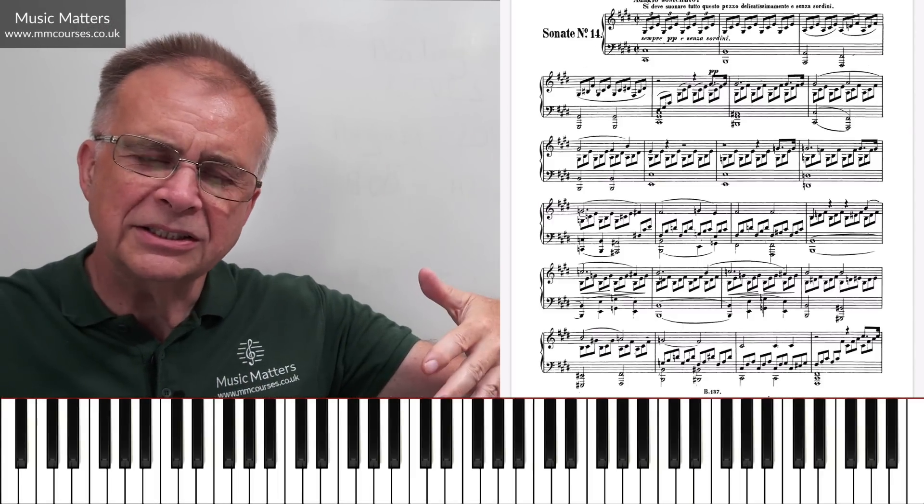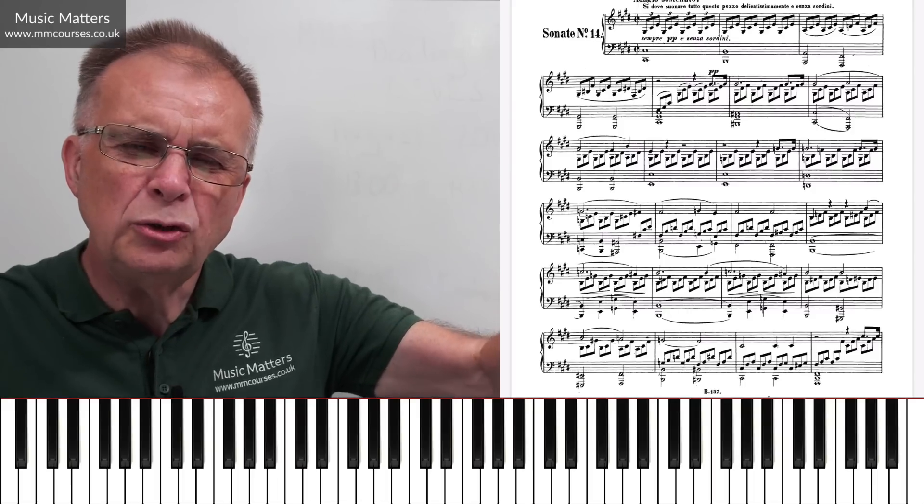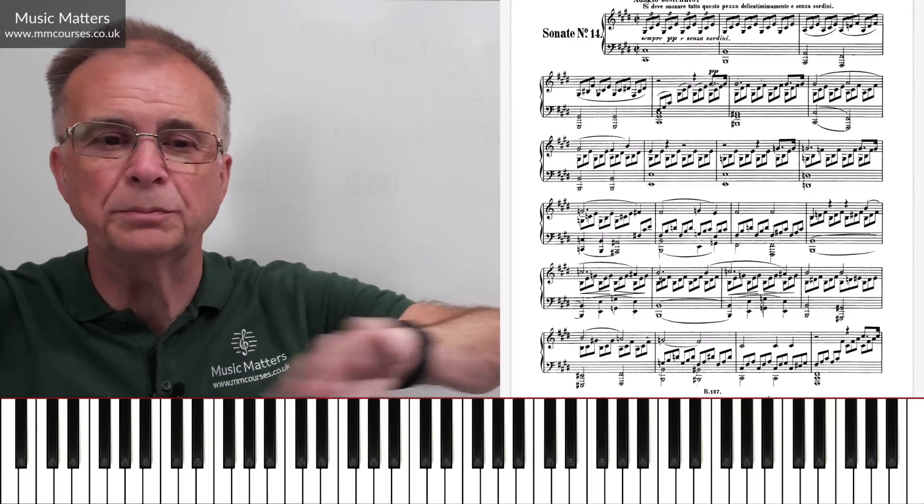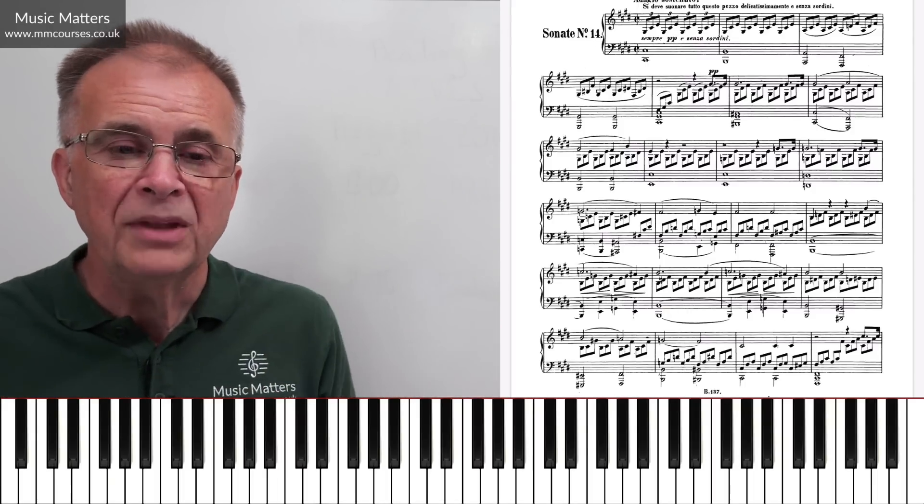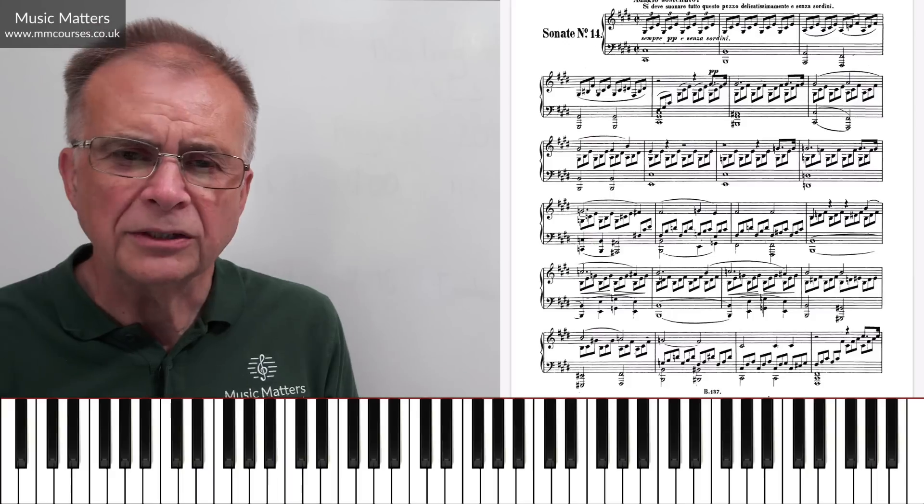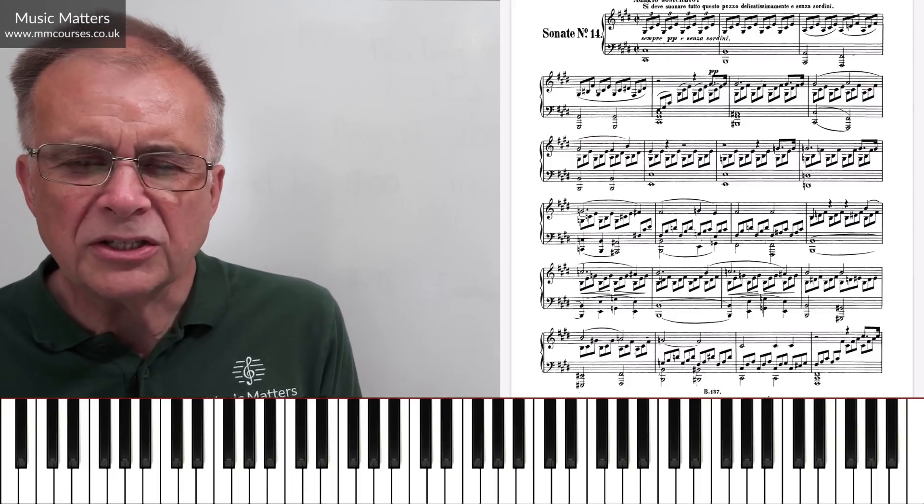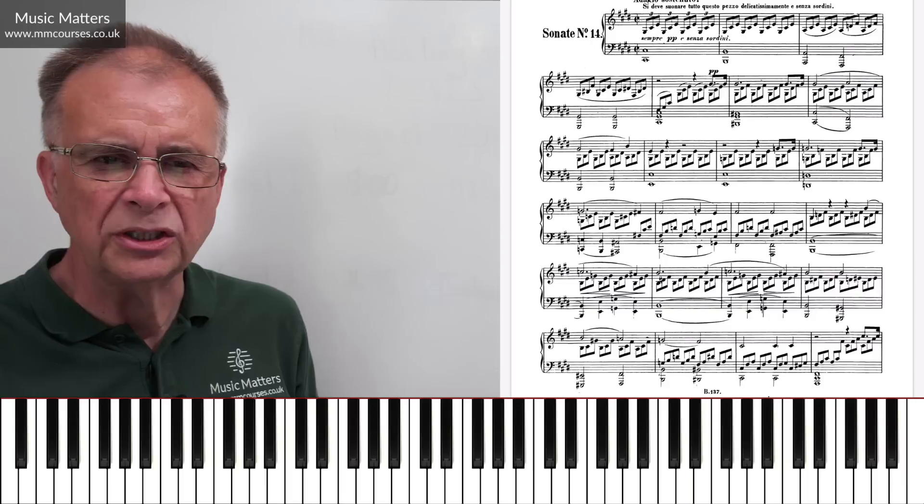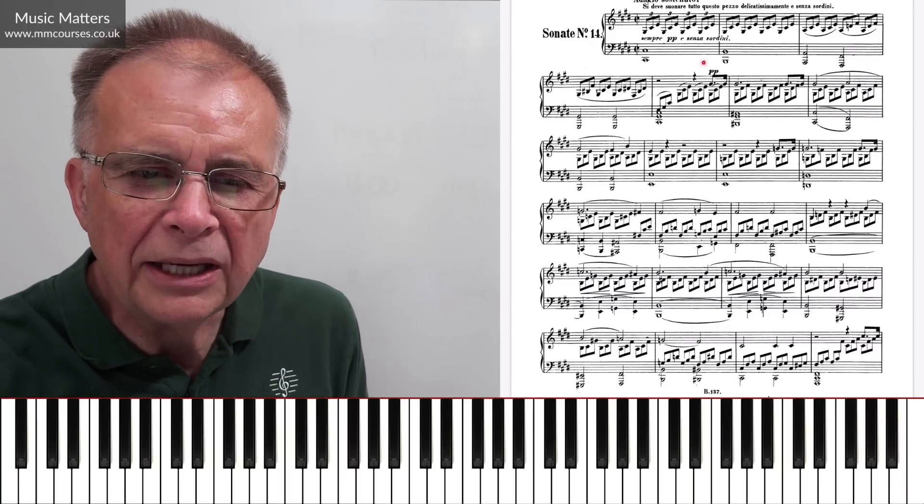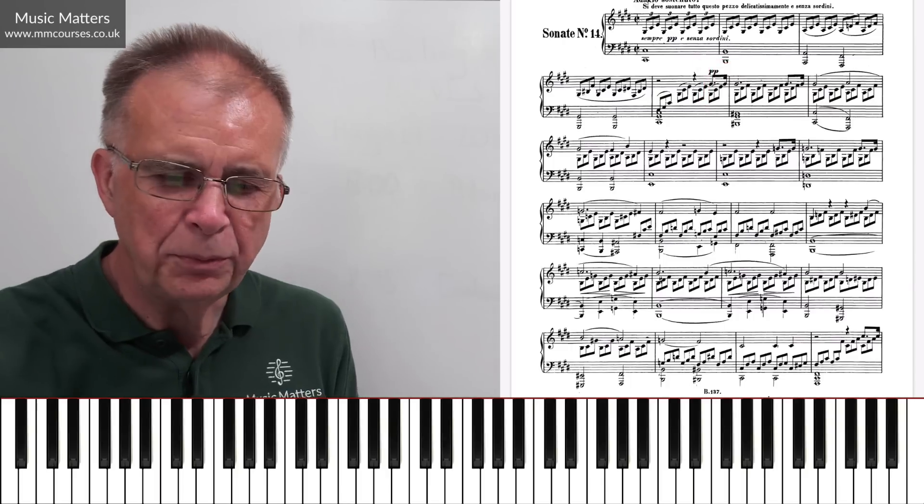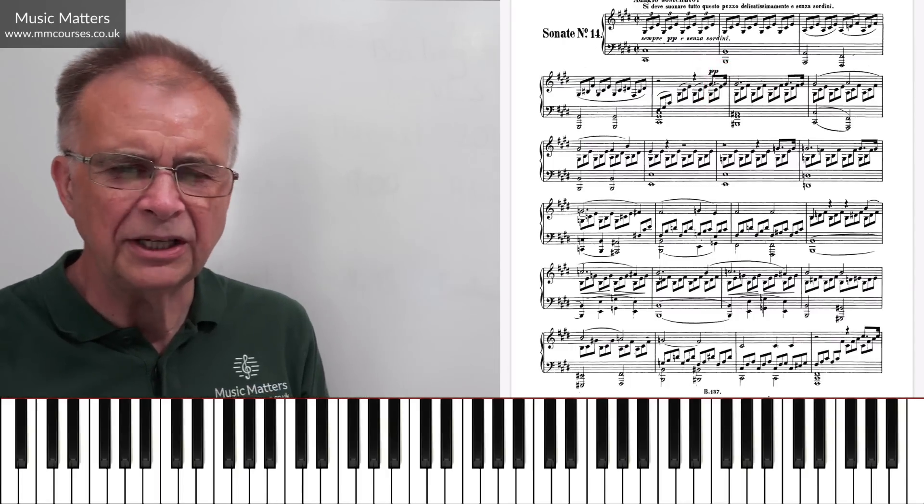Simply because people are thinking about those four beats in a bar. So what Beethoven is asking us to do is to think of it in two beats per bar. Slow beats, because it's adagio. But it makes all the difference in the world. Okay, well we start off with this quite long introduction, don't we? Before the main tune, the main theme comes in at this point. So let's see what Beethoven is up to.